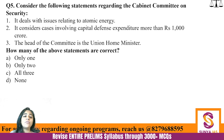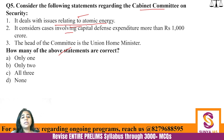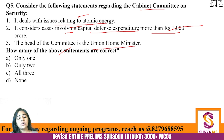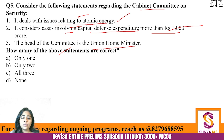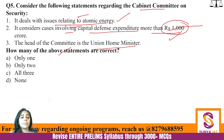Question 5: Consider the following statements regarding the Cabinet Committee on Security. (1) It deals with issues relating to atomic energy. (2) It considers cases involving capital defense expenditure more than 1,000 crore. (3) The head of the committee is the Union Home Minister. How many are correct? Two — statements 1 and 2. Atomic energy is a security-related matter, so yes. Cases involving defense expenditure above 1,000 crore are considered by this committee — note this factual detail. The third is incorrect: the head is the Prime Minister, not the Home Minister.